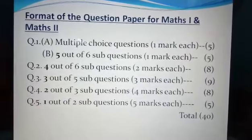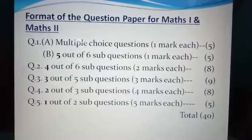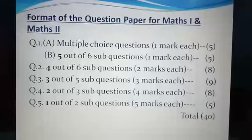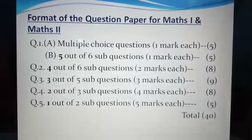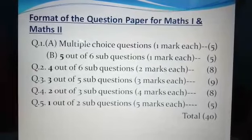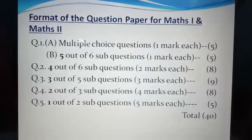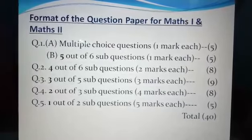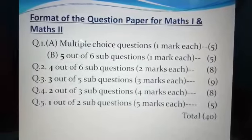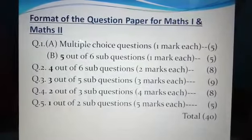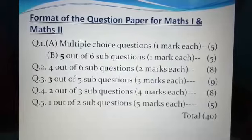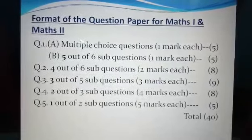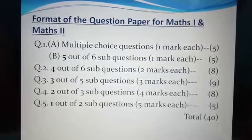Question 3 — 3 out of 5 sub-questions, three marks each, total 9 marks. Question 4 — 2 out of 3 sub-questions, four marks each, total 8 marks. Question 5 — 1 out of 2 sub-questions, five marks each, total 5 marks. Like this, total 40 marks.